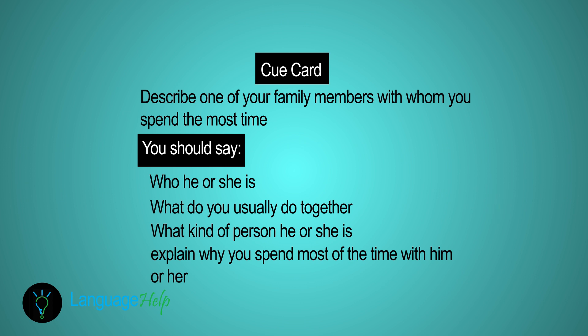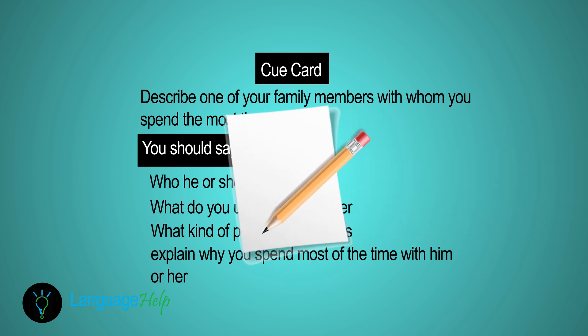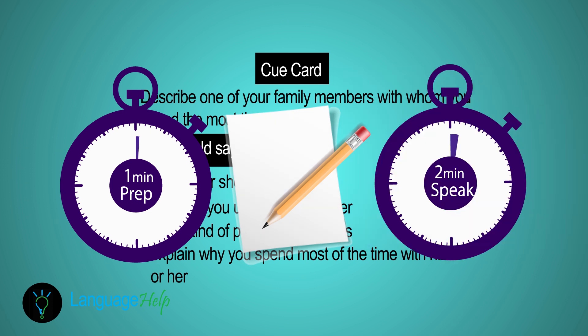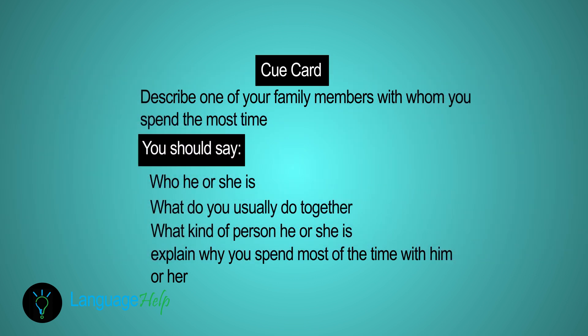In the second task of the IELTS Speaking test, you'll be given a piece of paper with a question written on it — this is what's called the cue card. You'll also be given an empty paper, a pencil, and only one minute to structure and organize your answer. After the minute is over, you're supposed to speak on the topic for two minutes, and then you'll answer one or two follow-up questions.